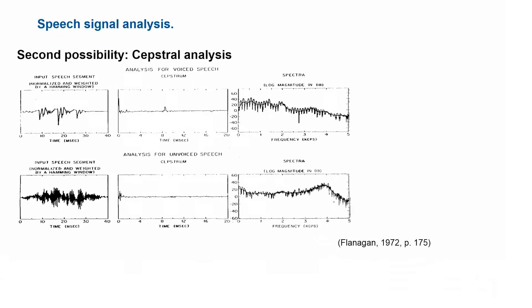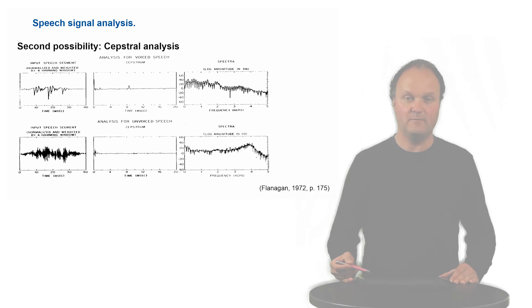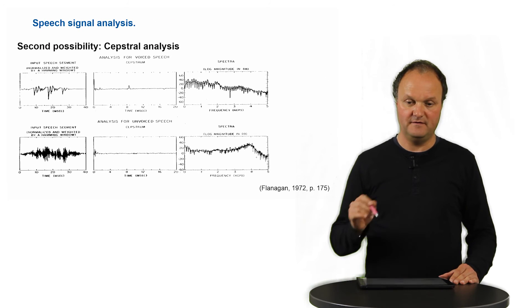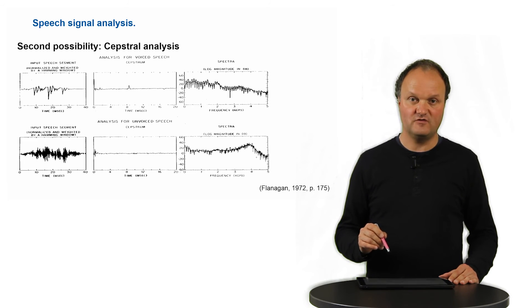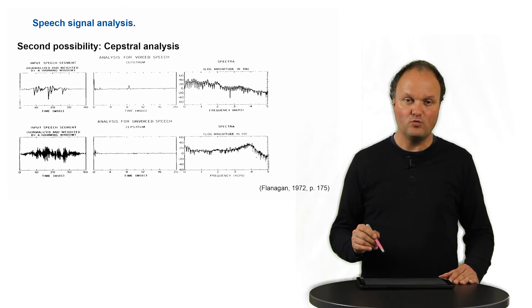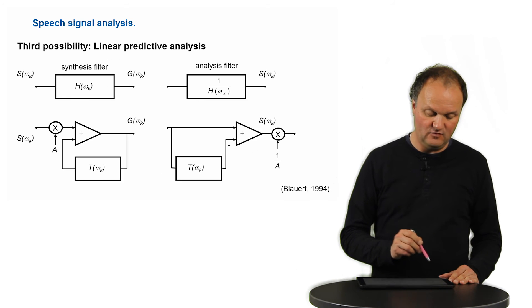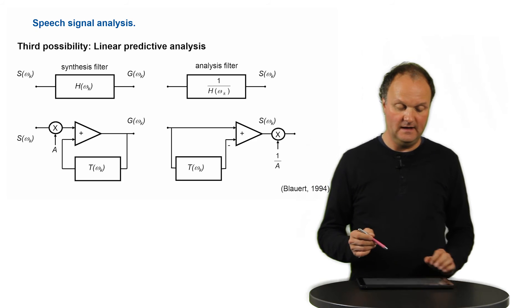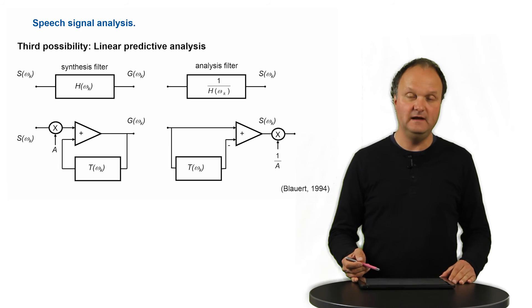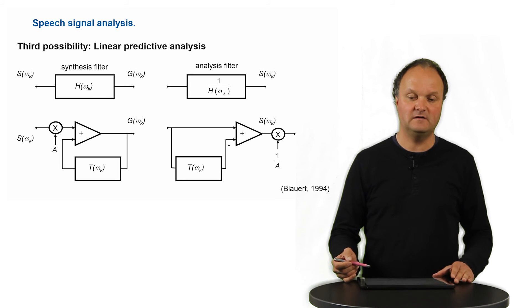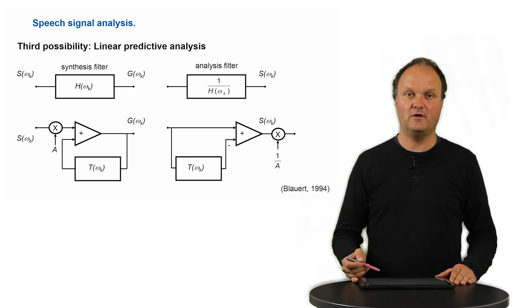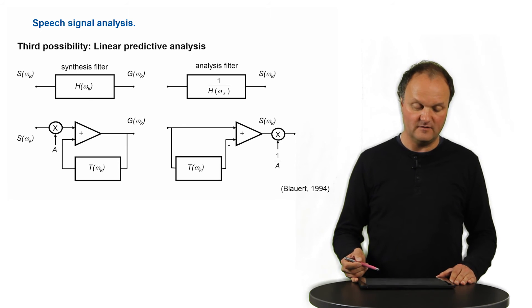The cepstral analysis thus helps us to separate the information of the excitation signal from the information of the vocal tract. There is a second way of separating these two pieces of information, which is based on linear predictive analysis, or LPC analysis, because this linear predictive principle is very much used in speech coding. So we talk about linear predictive coding of speech signals.